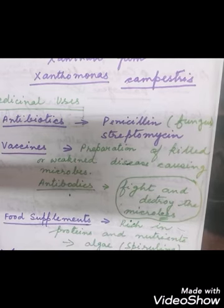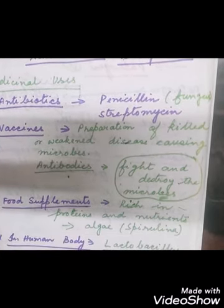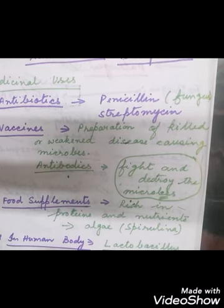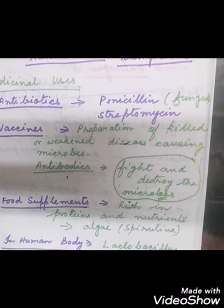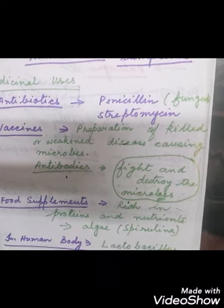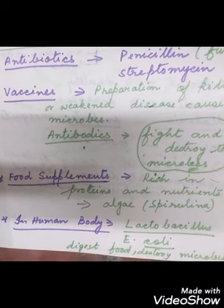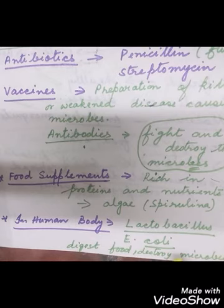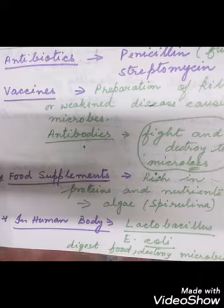Food supplements are another medicinal use of microorganisms. Algae like Spirulina are rich in protein and nutrients and can be used as food supplements. In the human body, Lactobacillus and E. coli help in destroying other harmful microbes in our gut. So microorganisms have various important medicinal uses alongside their commercial uses.